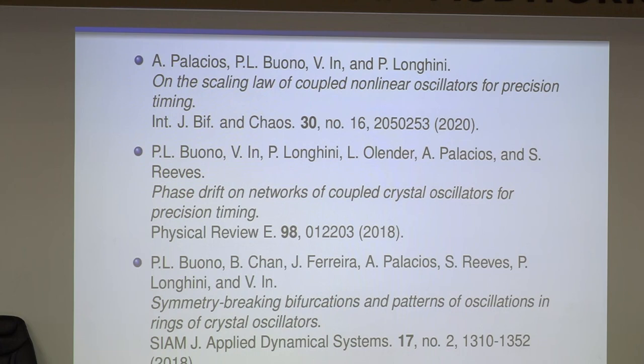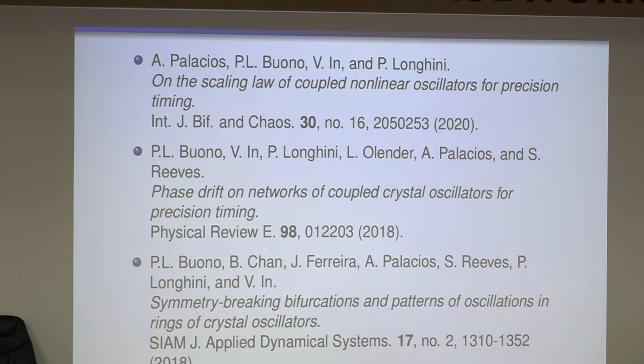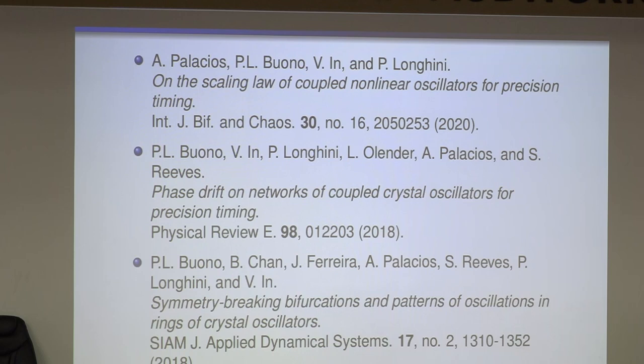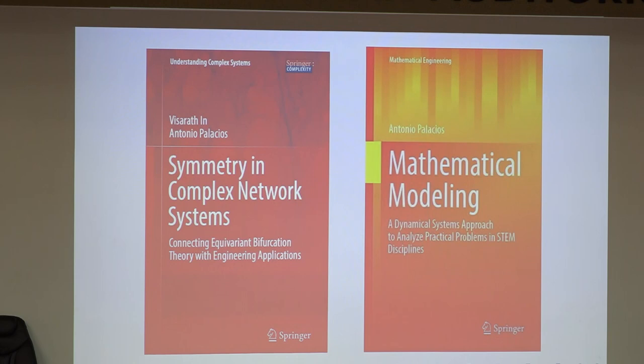So these are three publications. We published one paper in SIAM where we do the entire classification of the network. Then we show the actual phenomenology with the electronics or the circuitry in Physical Review E. And the last paper that we published is basically the last result that I show you that shows that the scaling law is precisely 1 over n, and that we cannot do anything better than that. That's the fundamental limit. And the results of this work and many other pieces of work were published on the first book with my colleague, Visarath.